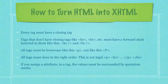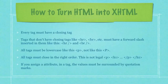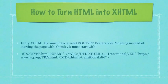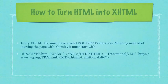All tags must also close in the right order. For example, this would not be a legal way to use tags in XHTML where I create a paragraph tag, then a heading tag, then close the paragraph tag before I close the heading tag — that is not legal in XHTML. If you assign an attribute in a tag, the values must be surrounded by quotation marks. Also, every XHTML file must have a valid doctype declaration, meaning instead of starting the page with a plain HTML tag, it must start with an HTML tag that resembles what I use here as an example.